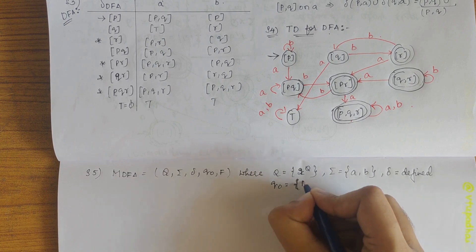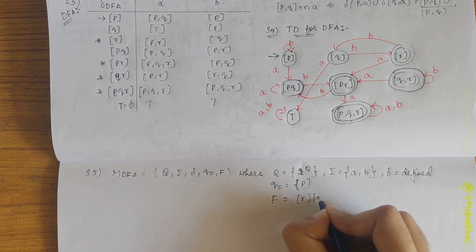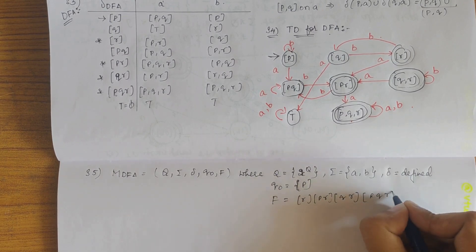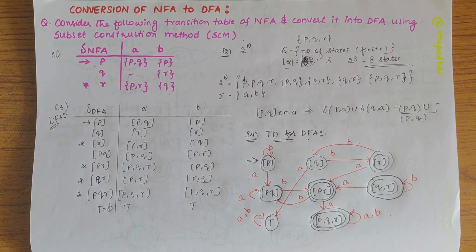The start state that is p and f being the final or accepting state that is r, pr, qr and pqr. So I hope you have understood how to solve this question, if you have any doubts do let me know in the comments and subscribe to my channel. Thank you.